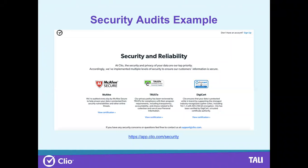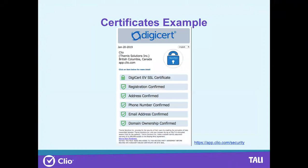You can ask any third party you're thinking of using what they're using to audit their security — internal or external. On Clio's website there's a link — included in these slides — where you can see they run different security audits regularly and what they're being used for, including McAfee checks for breaches. You can also view certificates directly from your browser by clicking the secure icon, and verify they're current and have all the checkboxes marked. That's a quick check you can do yourself to verify security.